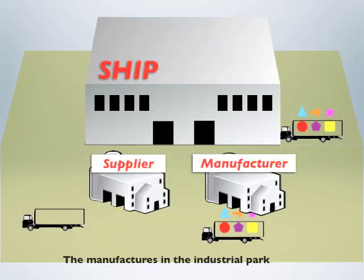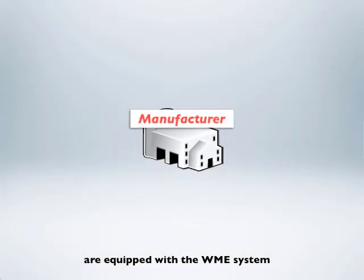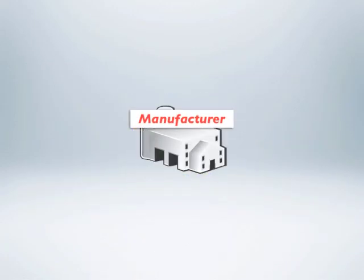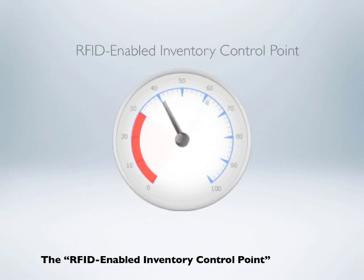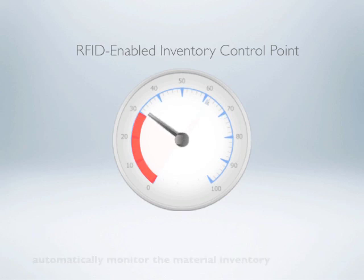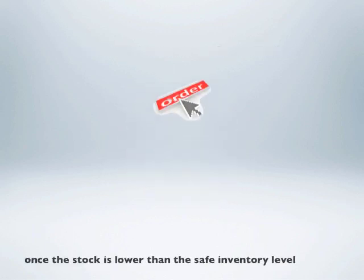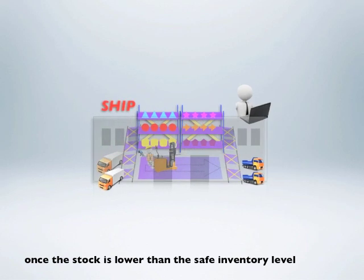The manufacturers in industrial park are equipped with WME system. The RFID-enabled inventory control point in the system can automatically monitor the material inventory and generate material requests once the stock is lower than the safe inventory level.